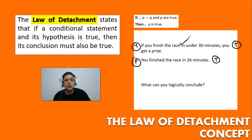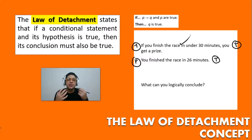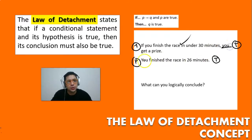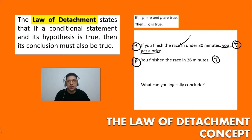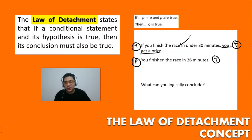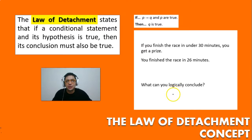So what can you conclude logically? If the first conditional is true, then the conclusion is true — you get a prize. If you finish the race under 30 minutes you get a prize, and you did finish under 30 minutes, so you are going to get a prize. Q is true.